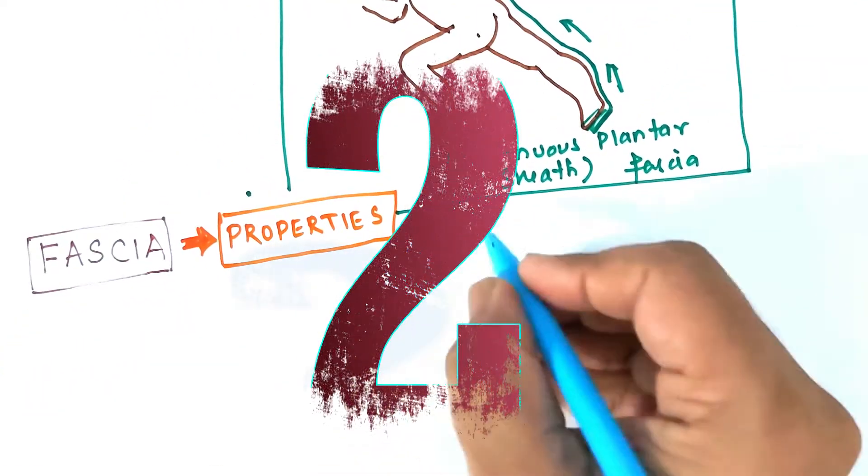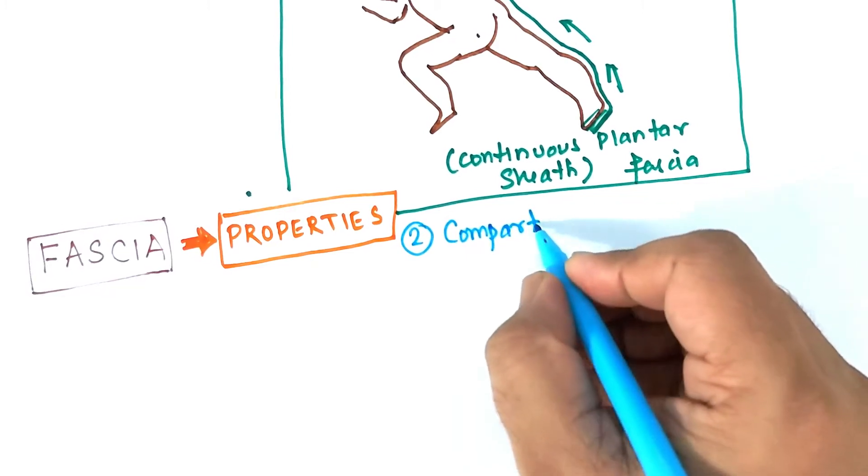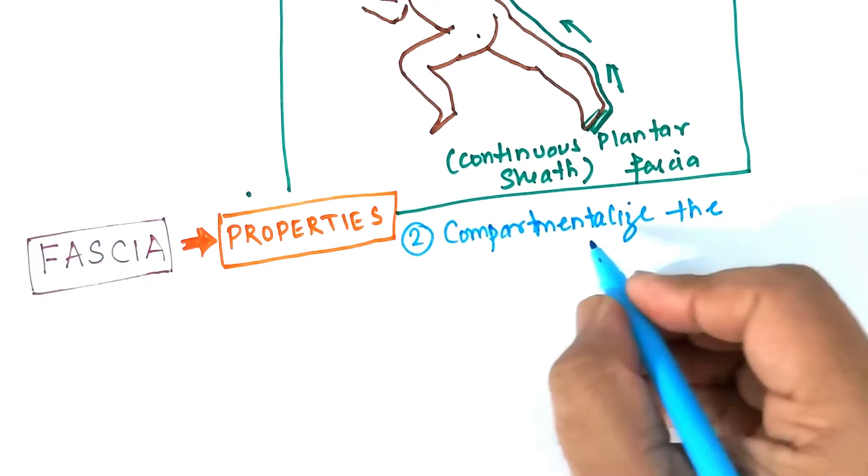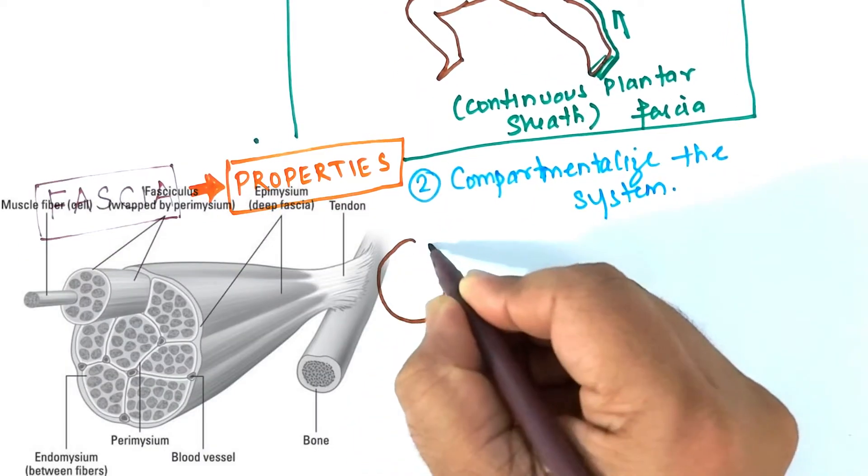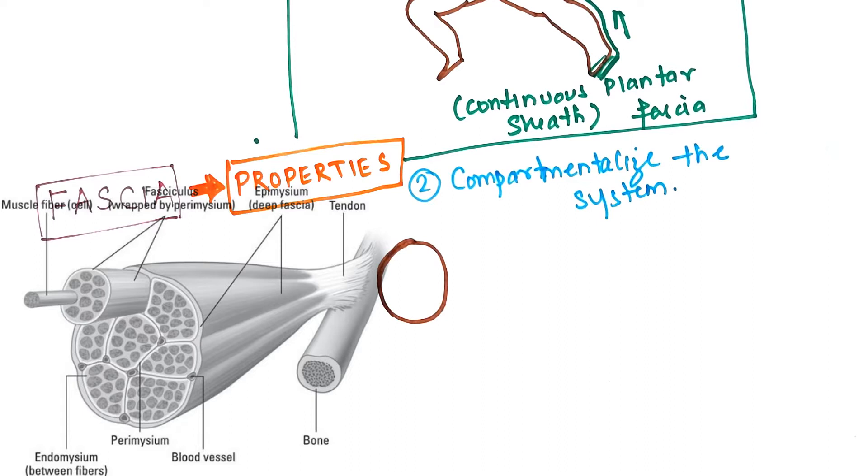So fascia is a continuous structure. It is also responsible for compartmentalizing the entire human body system. Like whenever we mention the flexors or the extensor compartment in the anatomy, these divisions or the compartments are done by the layer of the fascia surrounding them.